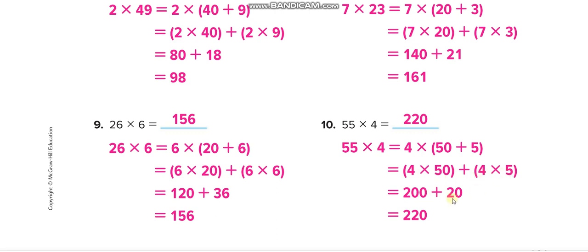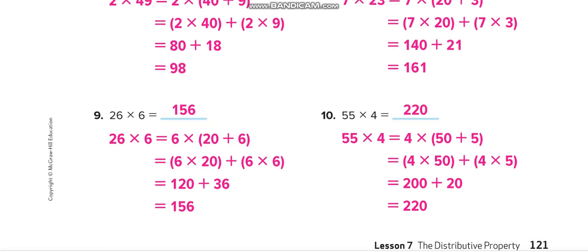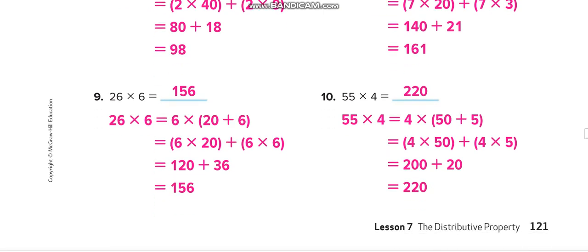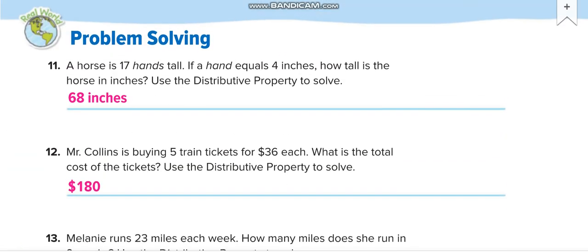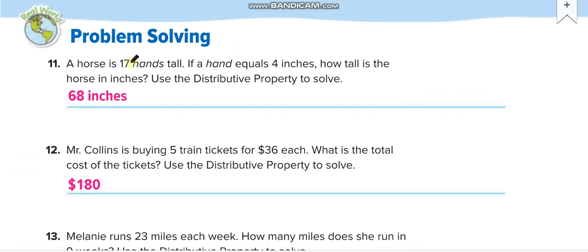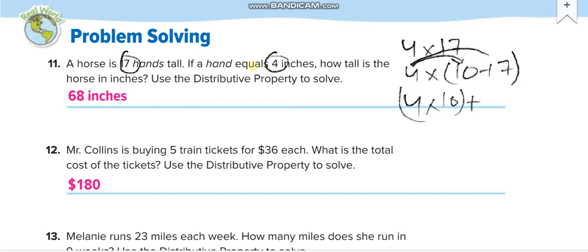Next page, see this one. You have to multiply 17 by 4. Simple, you can use the distributive property. 4 times 17, you can write it as 4 times (10 plus 7). Then you multiply first 4 with 10, put a plus sign in between, then multiply 4 with 7. 4 times 10 is 40, 4 times 7 is 28, and total is 68.